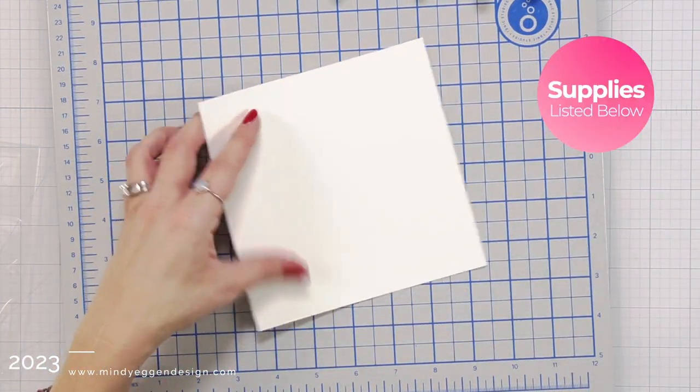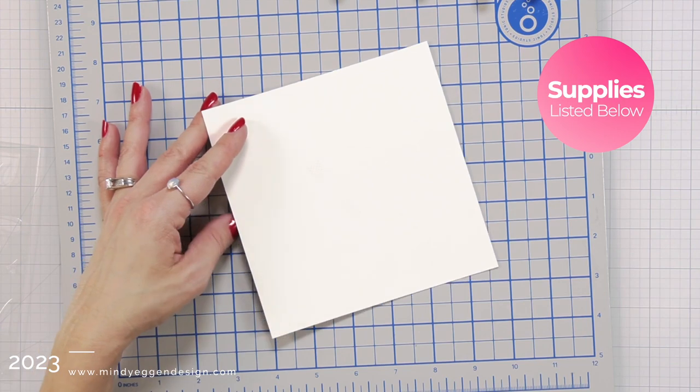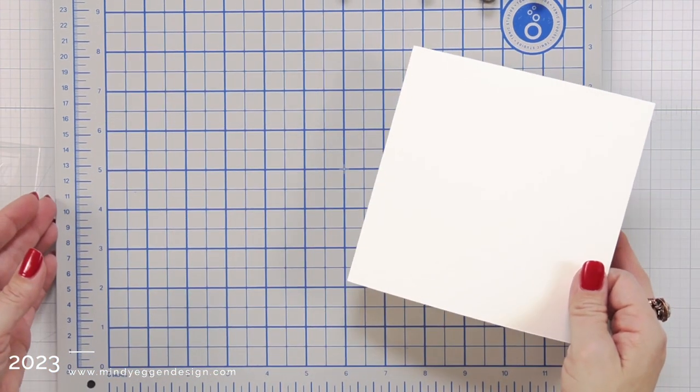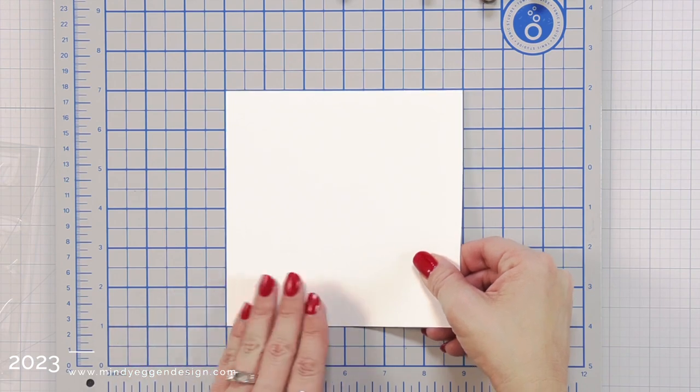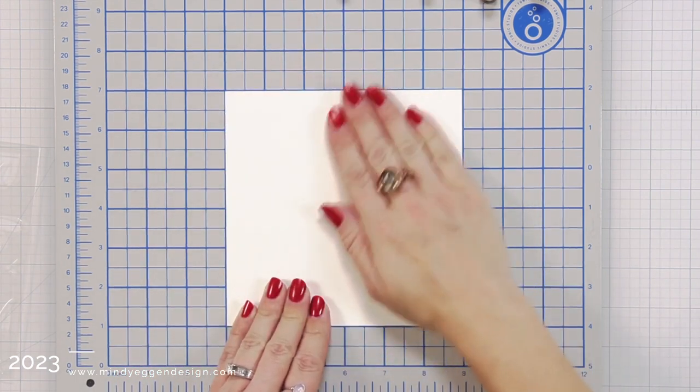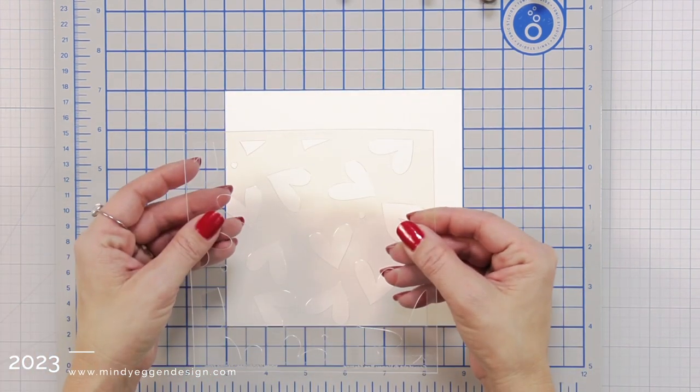I'm going to start with a piece of white cardstock cut to 6x6. I added a little bit of repositionable tape to the back to hold that down to my surface and I will be working on a magnetic station today.